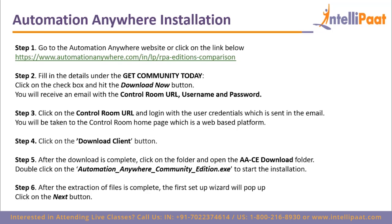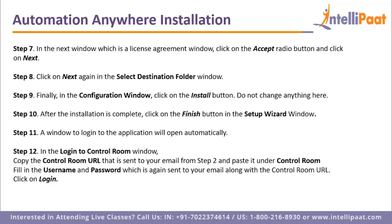After the download is completed, double-click on the Automation Anywhere Community Edition .exe to start the extraction. After extraction, the setup wizard will pop up — click next. In the license agreement window, click the accept radio button and click next. On the select destination folder window, do not change anything and click next. In the configuration window, click the install button without changing anything. After installation is completed, click finish in the setup wizard window.